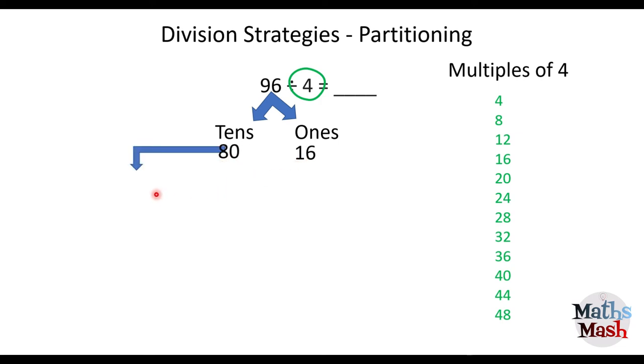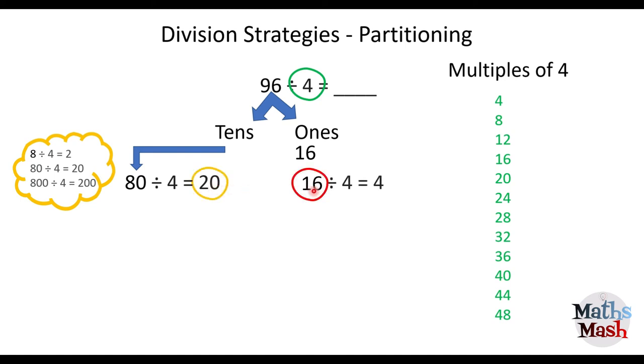And again, I'm left with 80. So remember what we did before. 8 divided by 4 is 2. So 80 divided by 4 is going to be 20. So I've got 80 divided by 4 is 20. And we'll be using that 20 later. And I've got 16 on the other side. Well, 16 is on the multiples of 4 list. So I know that that's 4. So I take my 20 and my 4. I add them together. And that's going to give me 24. So that means that 96 divided by 4 is 24.